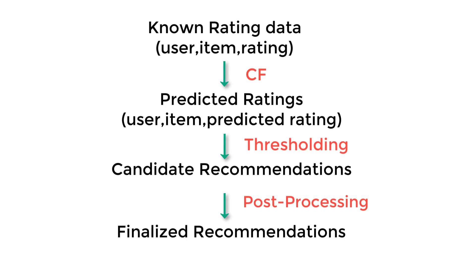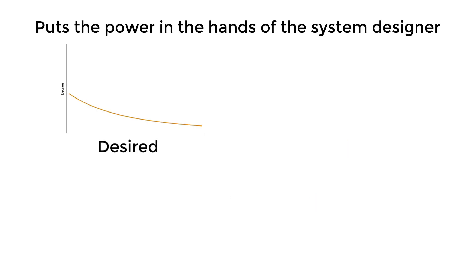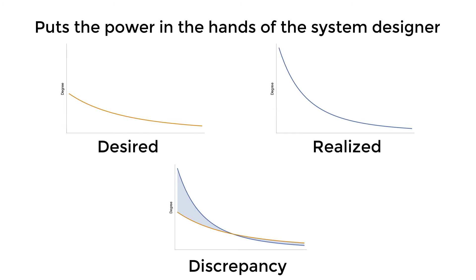However, we differ from existing approaches by making two novel contributions. First, our proposed approach puts the power in the hands of the system designer by letting her define a distribution of recommendations she wants to achieve across the system. Given the realized distribution of recommendations in the system, we can define a discrepancy term which captures how far away the realized recommendation distribution is from the desired distribution. Our discrepancy function mimics well-known diversity functions such as the Gini index or the entropy of the degree distribution. The choice of the target distribution is unconstrained and can be chosen to increase the prominence of any subset of items in the catalog.